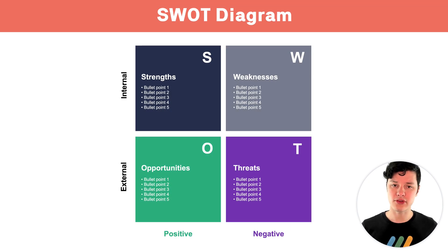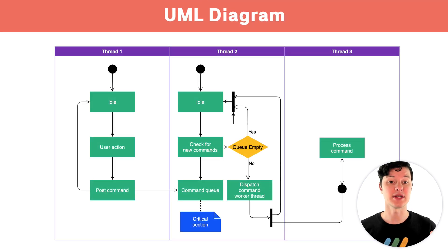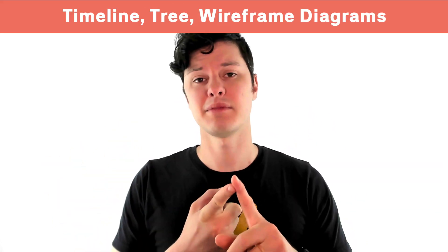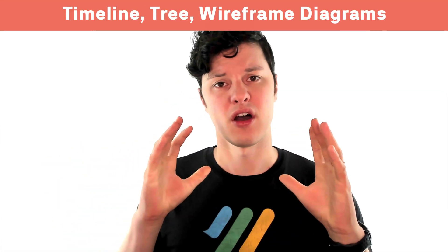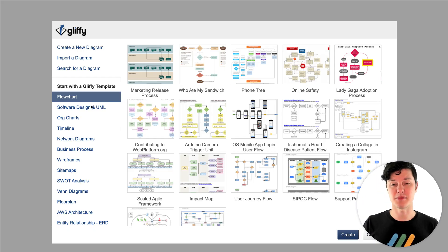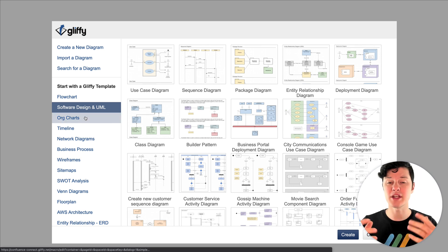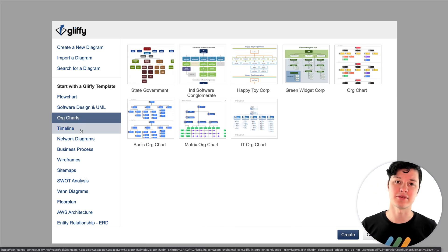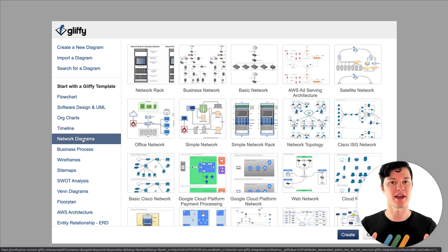When you're setting goals, use a SWOT diagram, and when you're building software, use a UML diagram. There are other great options like timeline, tree, or wireframe diagrams — lots of great use cases for these predefined types. These can help you be successful, not only because someone's put a lot of thought into them already, but most diagramming tools have templates ready for these different types so you don't have to start from scratch.